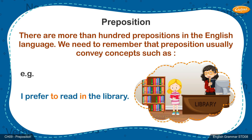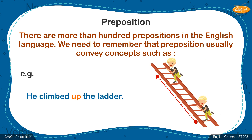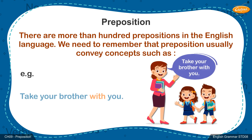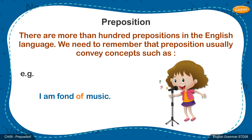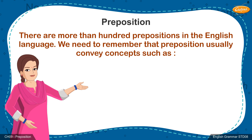Examples: A. I prefer to read in the library. B. He climbed up the ladder. C. He swam across the pool. D. Take your brother with you. E. I am fond of music. Further, we will study about various types of prepositions.